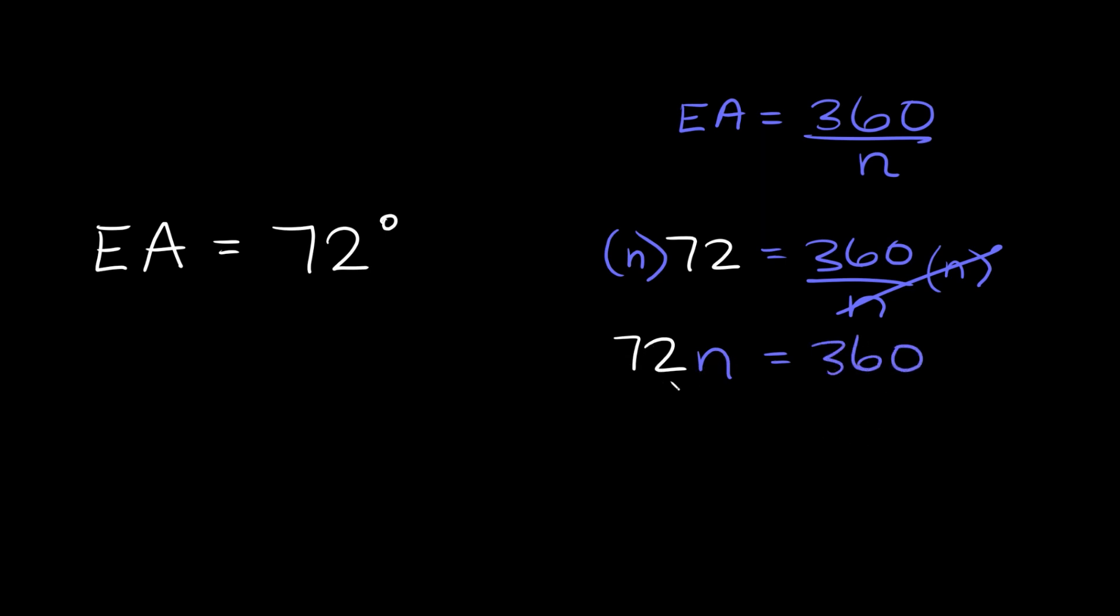Now to solve for n we can get rid of the 72 by simply dividing both sides by 72. Those cancel out so then here we just get that n is equal to 360 divided by 72 which is equal to 5. So when the exterior angle is equal to 72 degrees that means that shape has five sides.